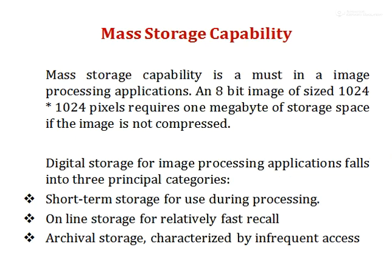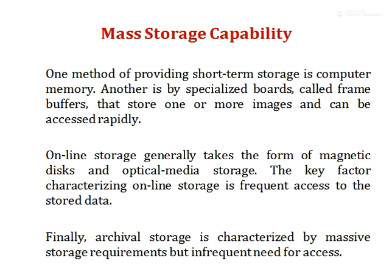The next one is mass storage capability — it is essentially a storage device. For example, to save an 8-bit image of size 1024×1024 pixels, it requires one megabyte of storage space in uncompressed form. Mass storage is categorized into three types: short-term, online, and archival. Short-term storage is the computer memory, also called a frame buffer — it can store one or more images and can be accessed rapidly.